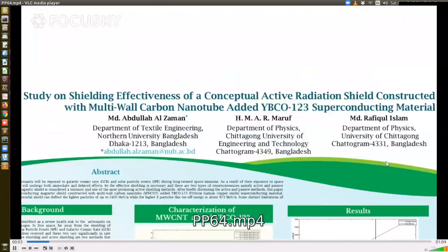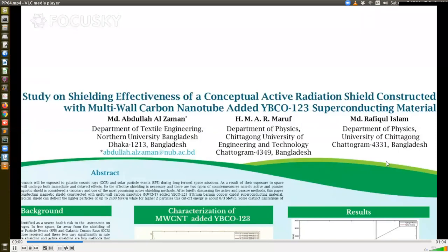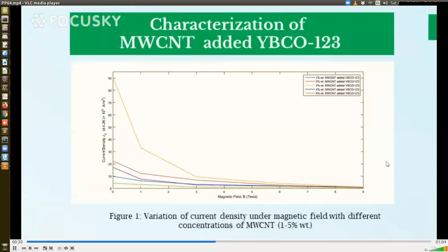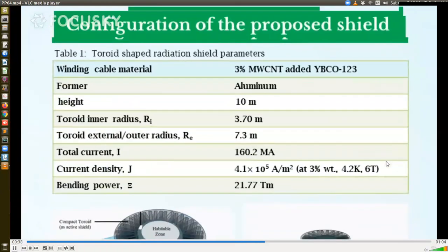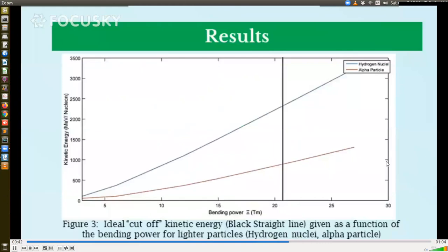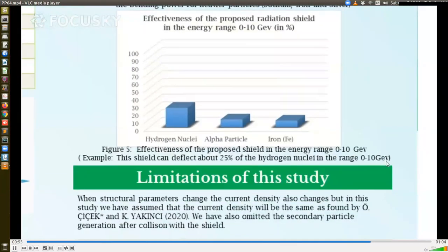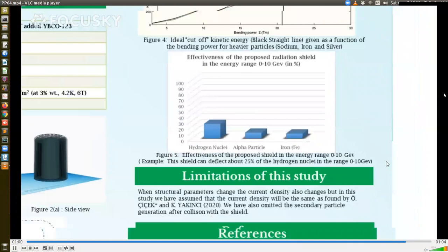So this is the title of the poster. Cosmic radiation has been identified as a severe health risk to the astronauts on long-term space missions. As counter measure, active and passive shielding methods are available. For making active shields, superconducting systems are most promising. In this poster, at first we have reviewed the previous works on superconducting magnetic shield. After that we have presented the characterization of the multi-wall carbon nanotube added yttrium barium copper oxide superconductor. After that we have illustrated our proposed shield theoretically. This toroidal shield can deflect the lighter particles up to 2400 mega electron volt and for heavier particles this cutoff energy is 873 mega electron volt. Effectiveness of this shield in a specific energy range and some specific limitations has also been discussed. So that's all from our poster. Thank you for the chance.